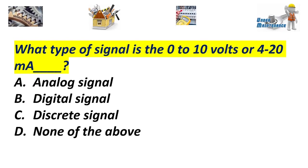Question number one: What type of signal is the 0 to 10 volts or 4 to 20 milliamps? A. Analog signal. B. Digital signal. C. Discrete signal. D. None of the above. Answer: A. Analog signal.